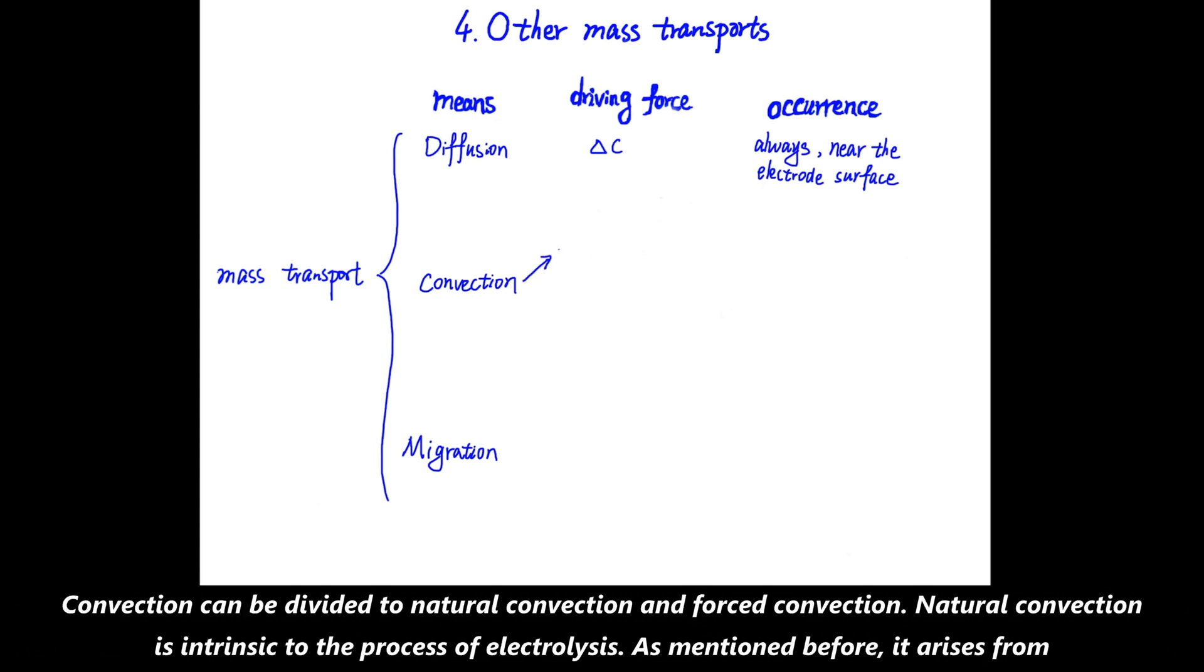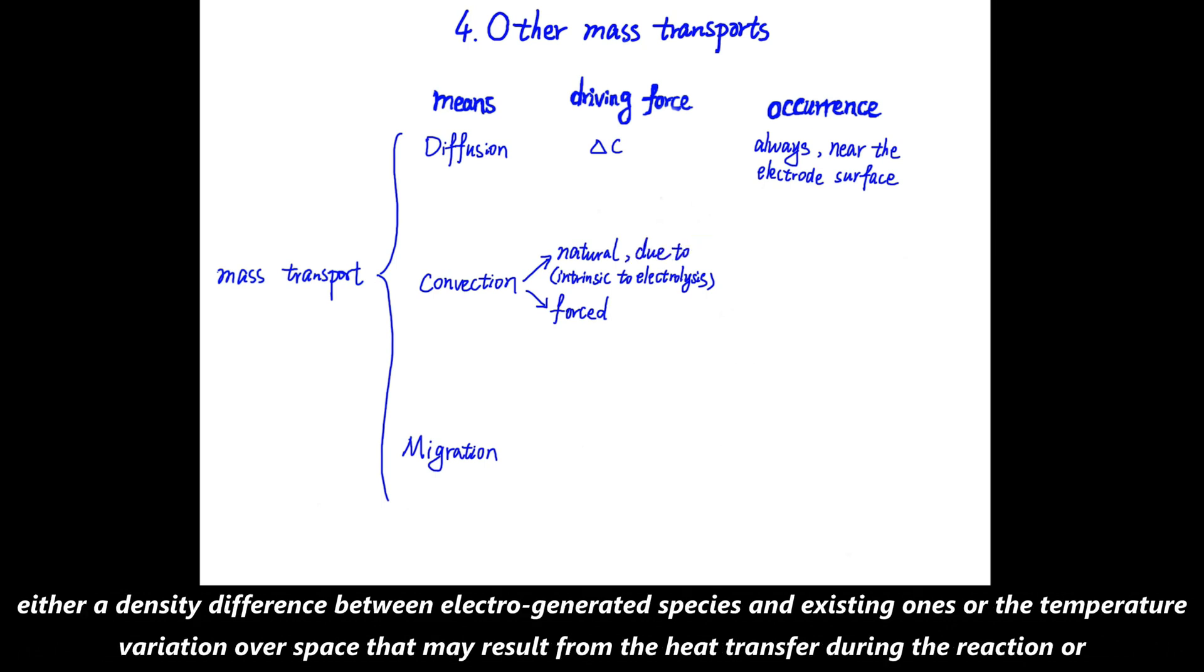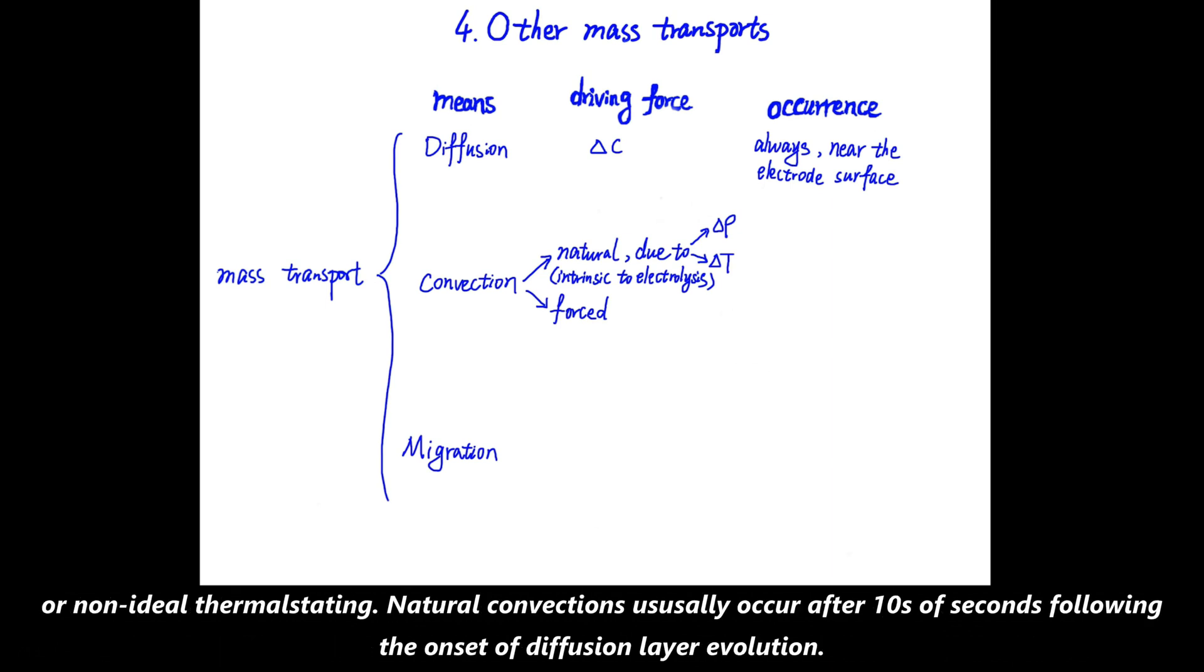Convection can be further divided into natural convection and forced convection. Natural convection is intrinsic to the process of electrolysis, and as mentioned before, it arises from either a density difference between the electro-generated species and the existing ones, or the temperature variation over the space that may result from heat transfer during the reaction, or non-ideal thermostating. Natural convection usually occurs after tens of seconds following the onset of diffusion layer evolution.